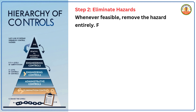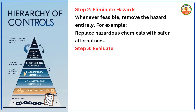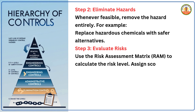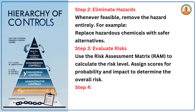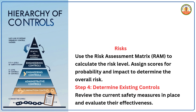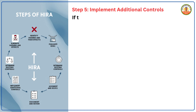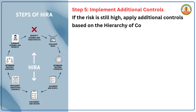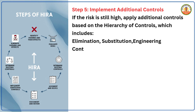Step 3 — Evaluate risks: use the Risk Assessment Matrix (RAM) to calculate the risk level, assigning scores for probability and impact to determine the overall risk. Step 4 — Determine existing controls: review the current safety measures in place and evaluate their effectiveness. Step 5 — Implement additional controls: if the risk is still high, apply additional controls based on the hierarchy of controls, which includes elimination, substitution, engineering controls, and administrative controls.